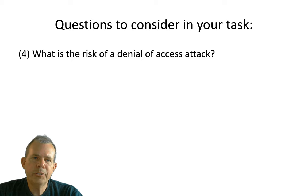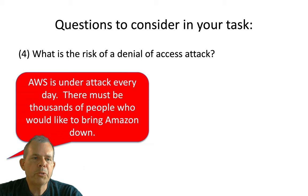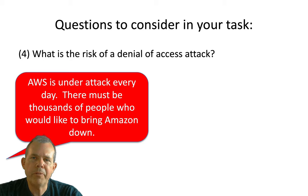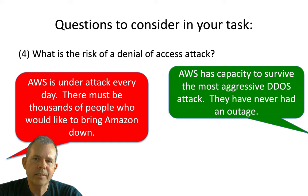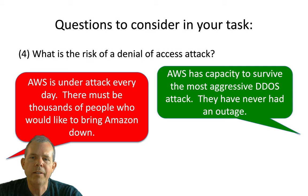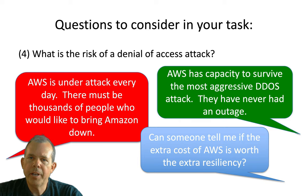Another consideration is denial of access attacks — maybe a DDoS. The concern: AWS is under attack all the time and thousands of people would like to bring them down, so denial of service could happen if we go to AWS. The counter-argument: Amazon has the ability to survive the most severe distributed DDoS attacks — they've never had an outage and must be well prepared. The boss asks: is there extra resiliency in AWS, do they charge extra money, and is it worth it? Tell me what the cost of an outage is and how much I should pay to avoid it.